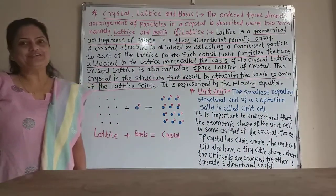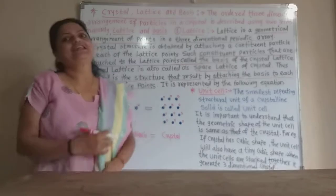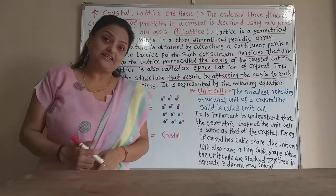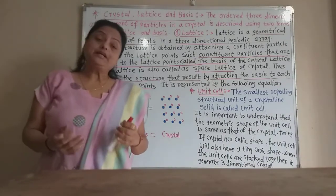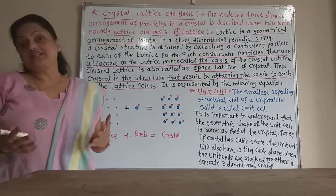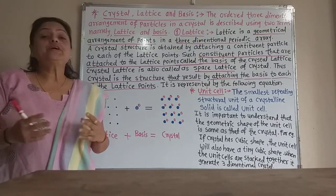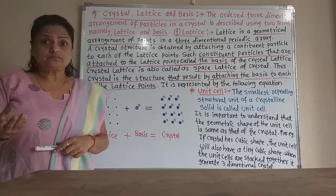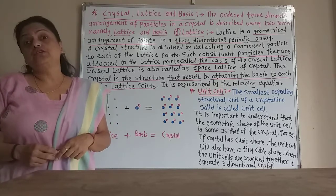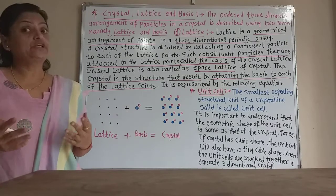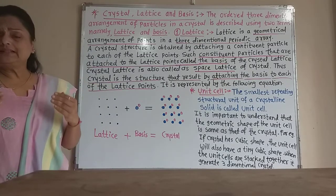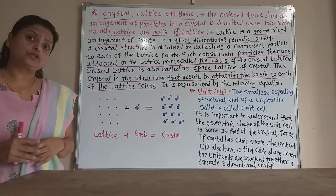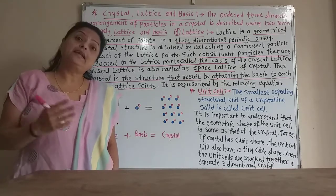Welcome students to the 12 science chemistry class. We are learning chapter number one, the solid state. In the last two lectures we already learned the types of solids — crystalline solid and amorphous solid — and the types of crystalline solids: metallic solid, covalent network solid, ionic solid, and molecular solids. Now in this chapter we will learn in detail about crystalline solids only.